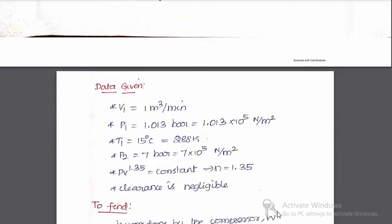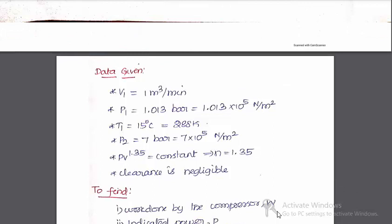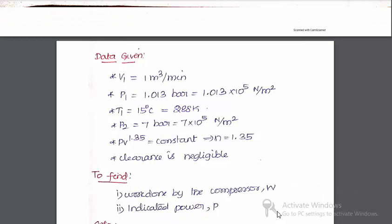The data given: V1 is equal to 1 meter cube per minute. P1, T1, P2, and N values are given in the problem. Clearance is negligible. We need to find out the work done by the compressor and indicated power.